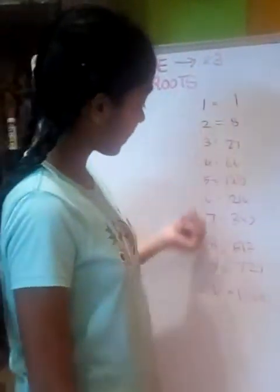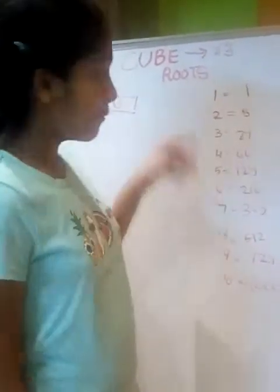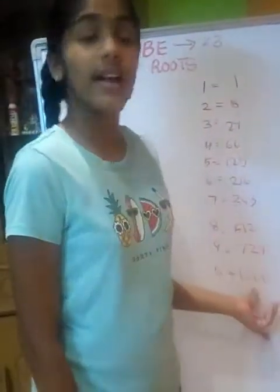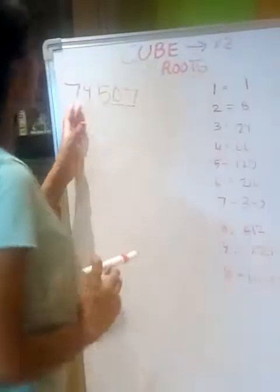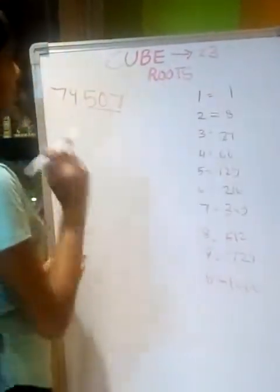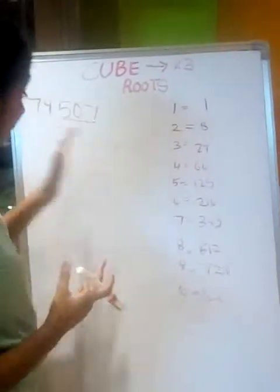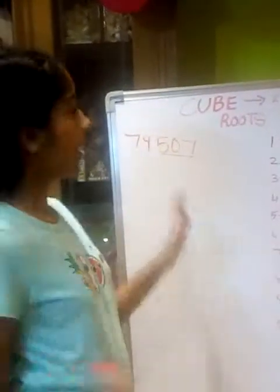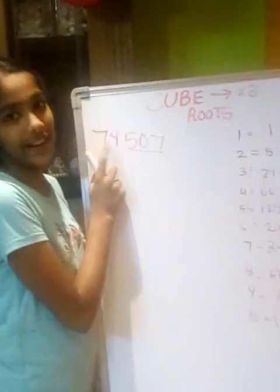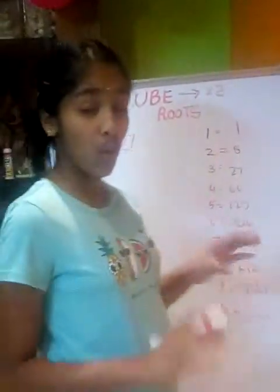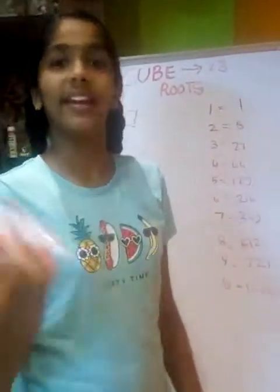First, we have learned that single-digit numbers are multiplied 3 times to get the cube. Here we have the answer and we need to find the original number. So for 79,507, how will we find the cube root? First, we need to leave the last 3 digits — 5, 0, 7 — completely. We mark and keep 79. Now, most importantly, we need to remember only this table. Then cube roots become very easy.